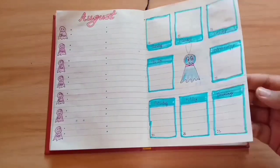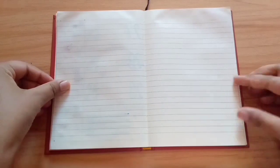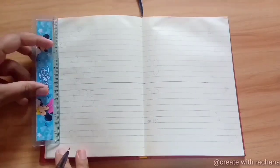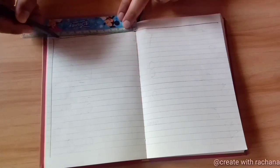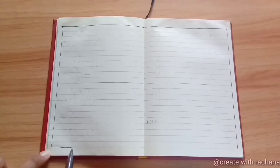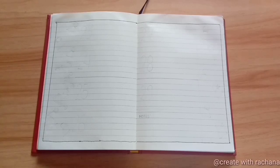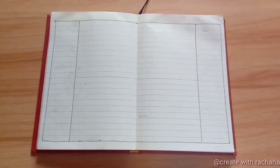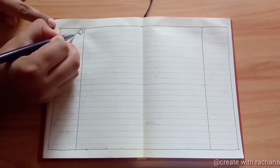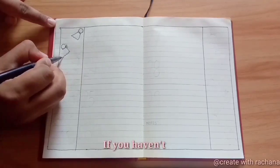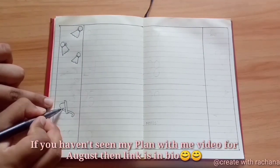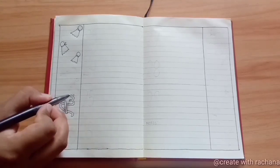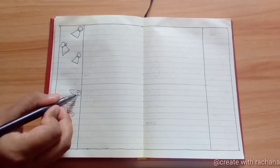Now moving on to the final weekly spread. For the final weekly spread I have created a rectangle and then made two different columns on each side. Then I added some doodles and the name of the month in the column. Now you can also decorate this if you have time or leave it as it is.